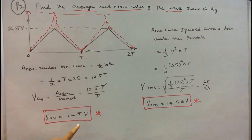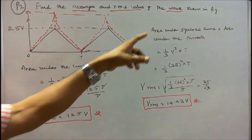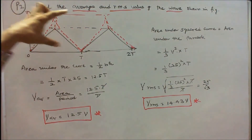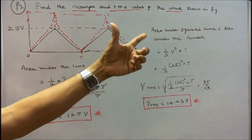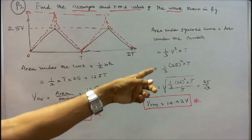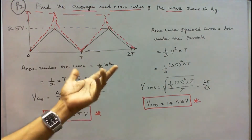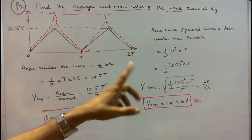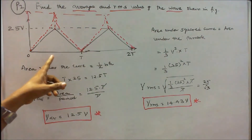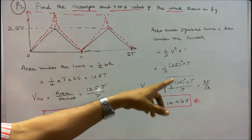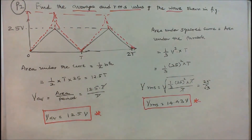The average voltage is 12.5 volts. The area under the squared curve equals the area under the parabola, which is (1/3) times V squared times T. With V equal to 25, that is (1/3) times 625 times T. V RMS equals the square root of that area divided by period T. The T's cancel, giving V RMS equal to the square root of (1/3 times 625), which equals 14.43 volts.